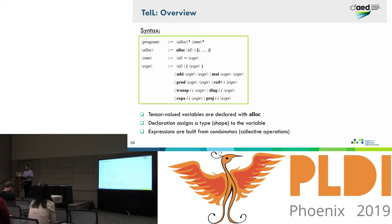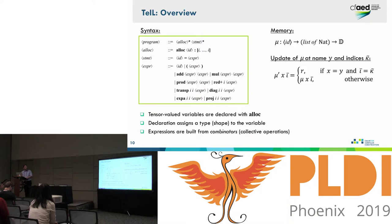With allocations we declare variables and assume memory has been allocated for them. We take an abstract view of memory, modeling it as a map from identifiers to tensors. Tensors themselves we think of as maps from some index list to the domain of discourse — typically floating point numbers. This abstract view means that the most atomic update we can do is pick a specific variable y and index set kappa, and produce a new function out of the original memory. This is relevant for our development of type safety.